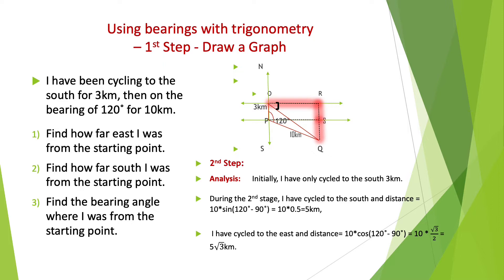The second step is to analyze. In the first question, if you want to find out how far east you were from the starting point, you are actually looking at triangle PQS, and you need to find out the distance of PS — that is, how far east you were from the starting point. In the second question, if you want to find how far south you were from the starting point, you are also looking at triangle PQS. You need to find out the length of SQ and add it on top of OP. The total distance is how far you were traveling from the starting point.